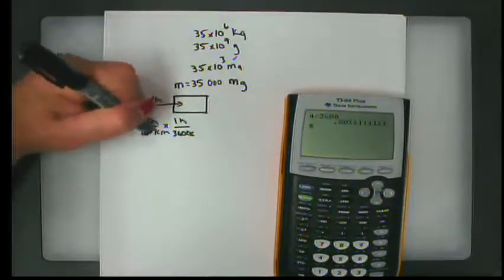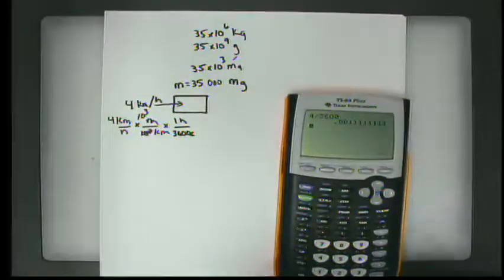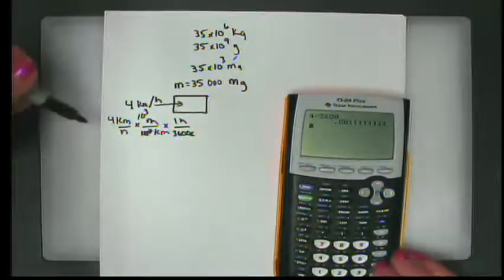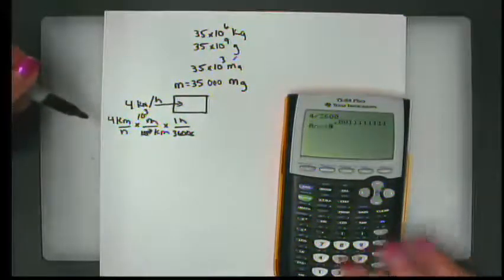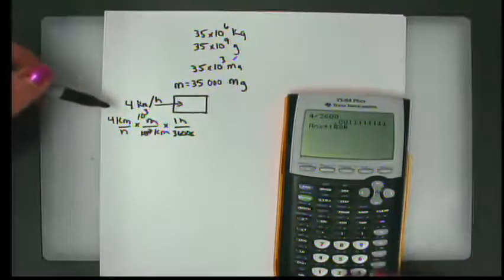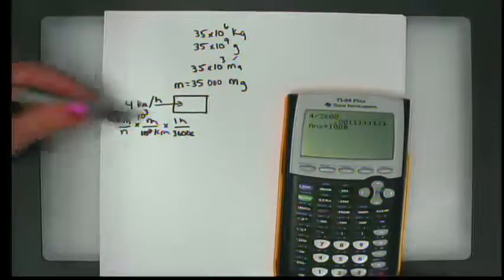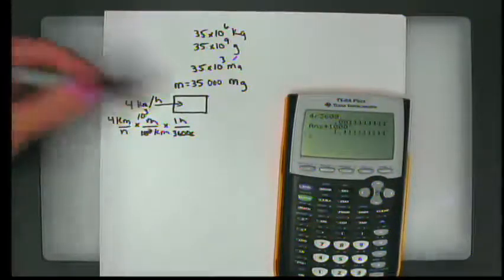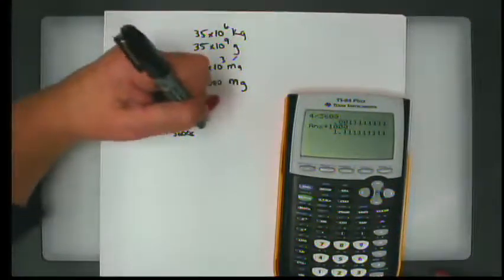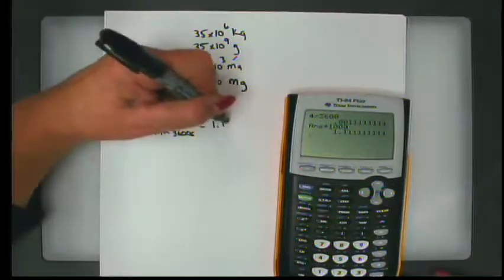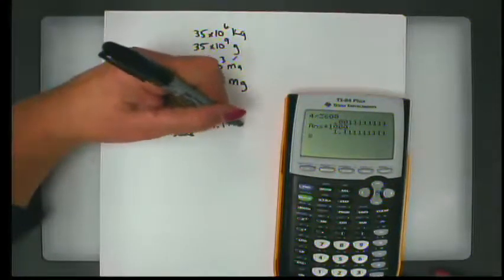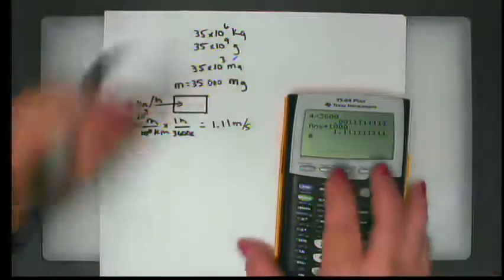Using 10 to the third meters per kilometer — I had my conversion factor on the wrong side. The corrected result is 1.11 meters per second.